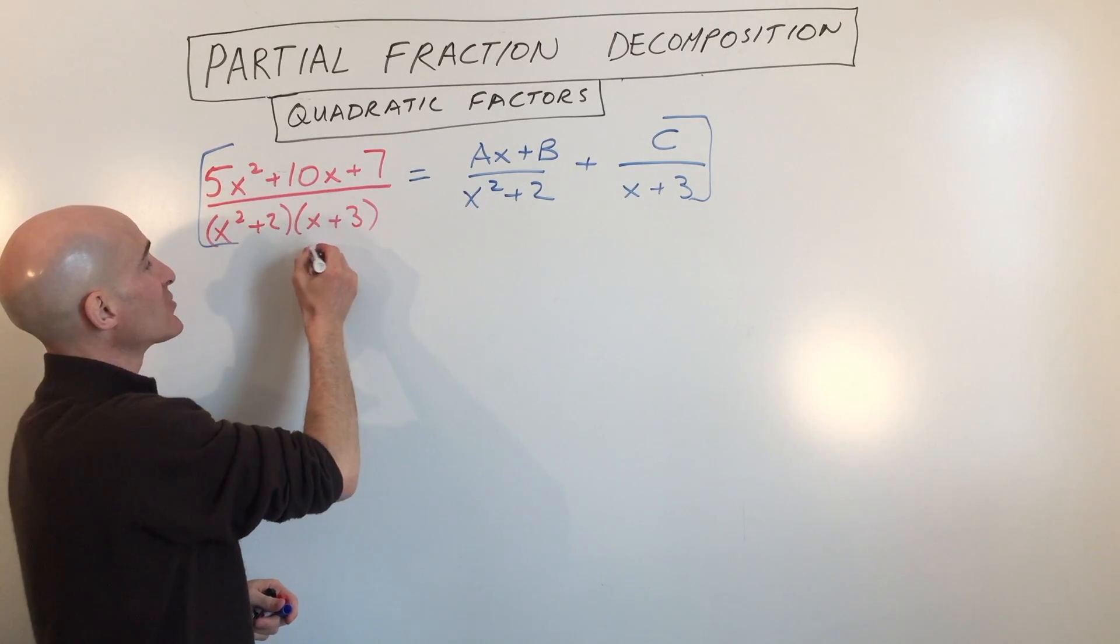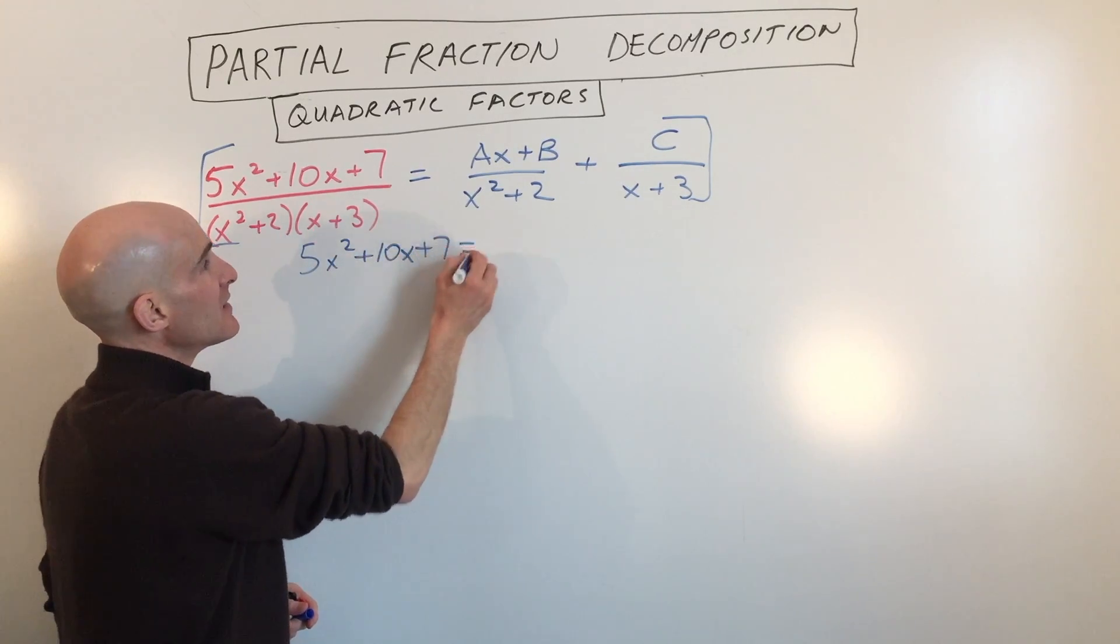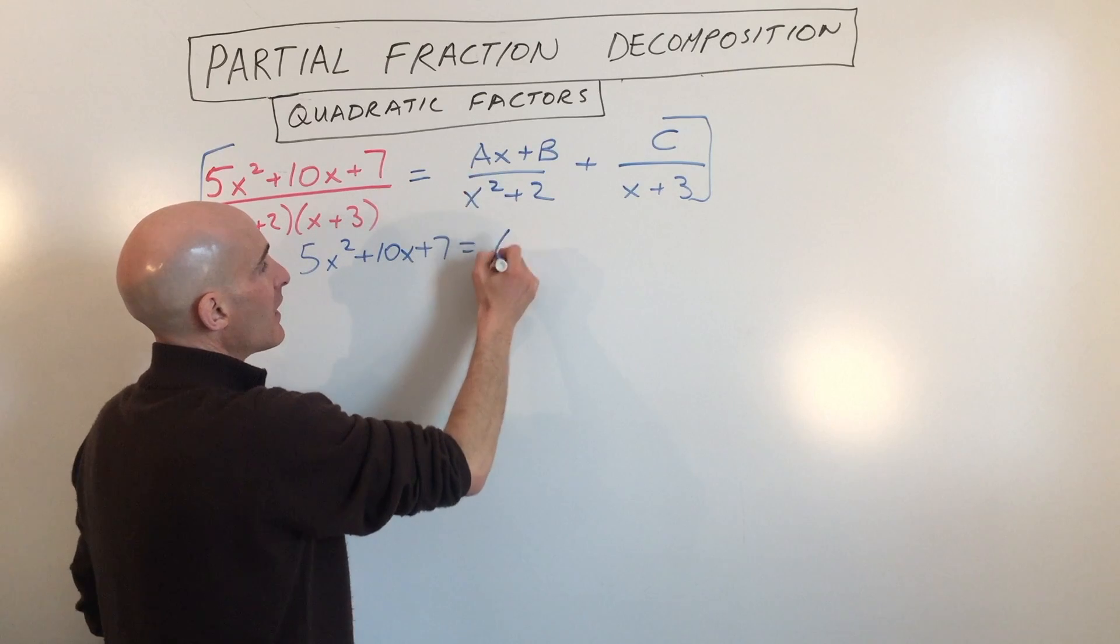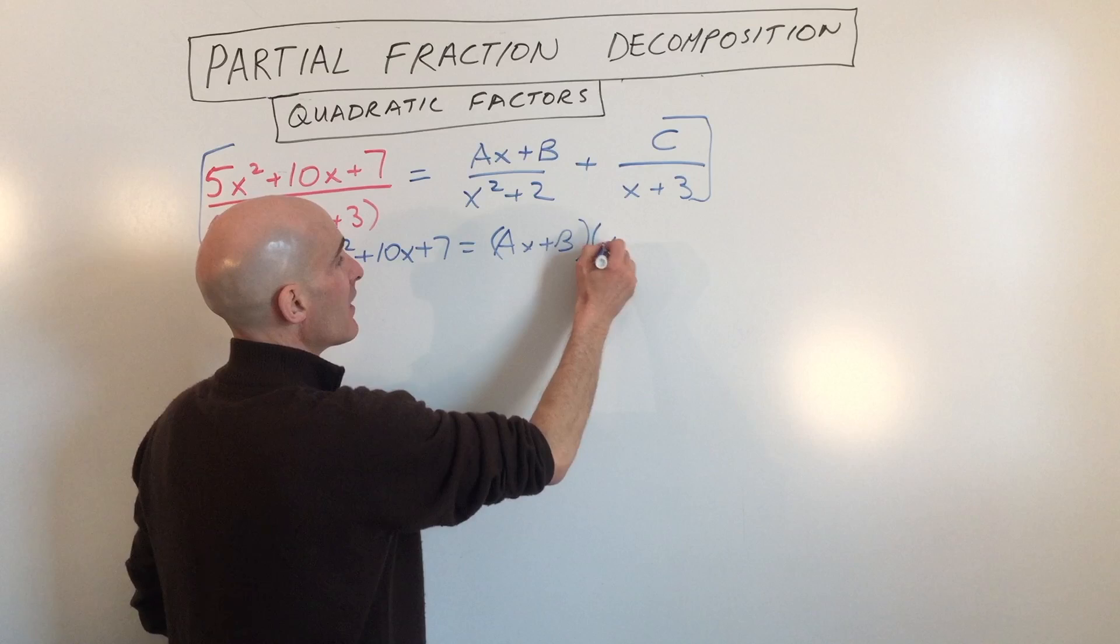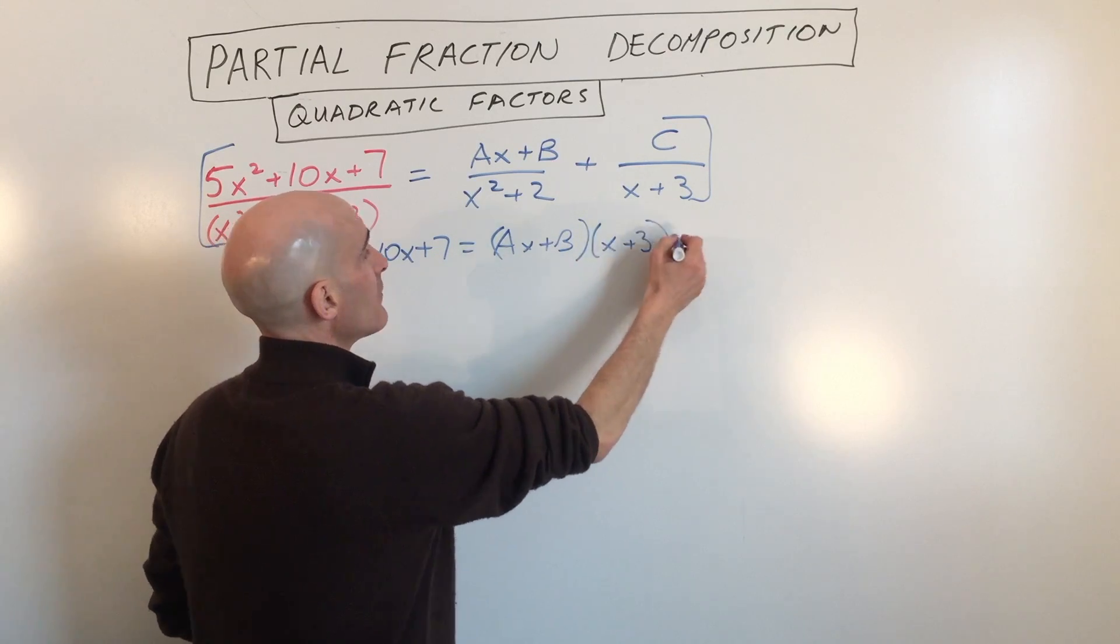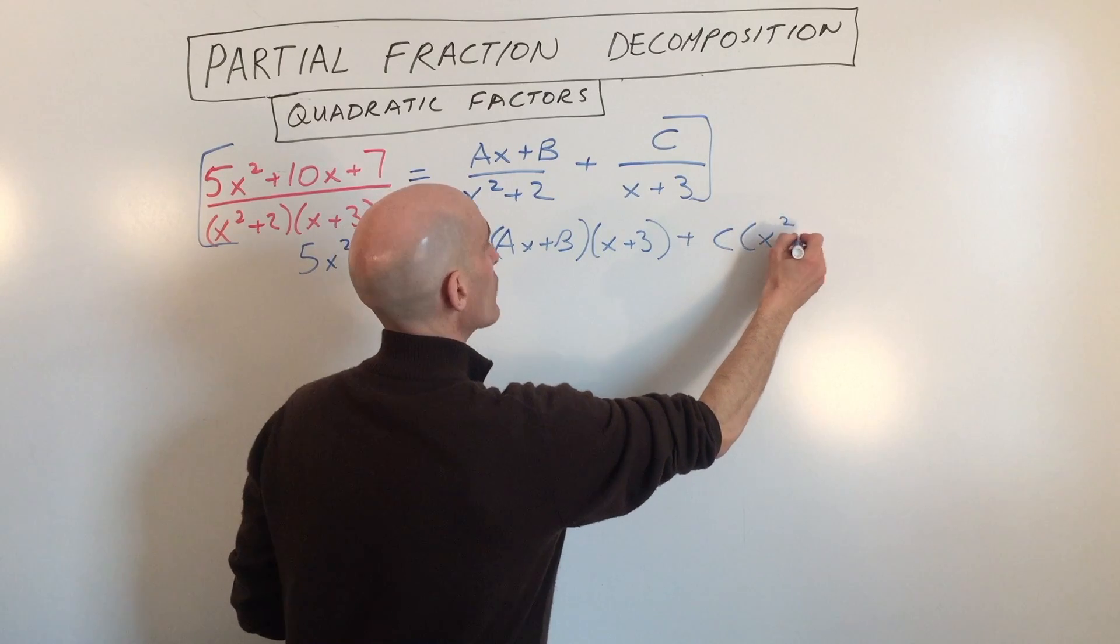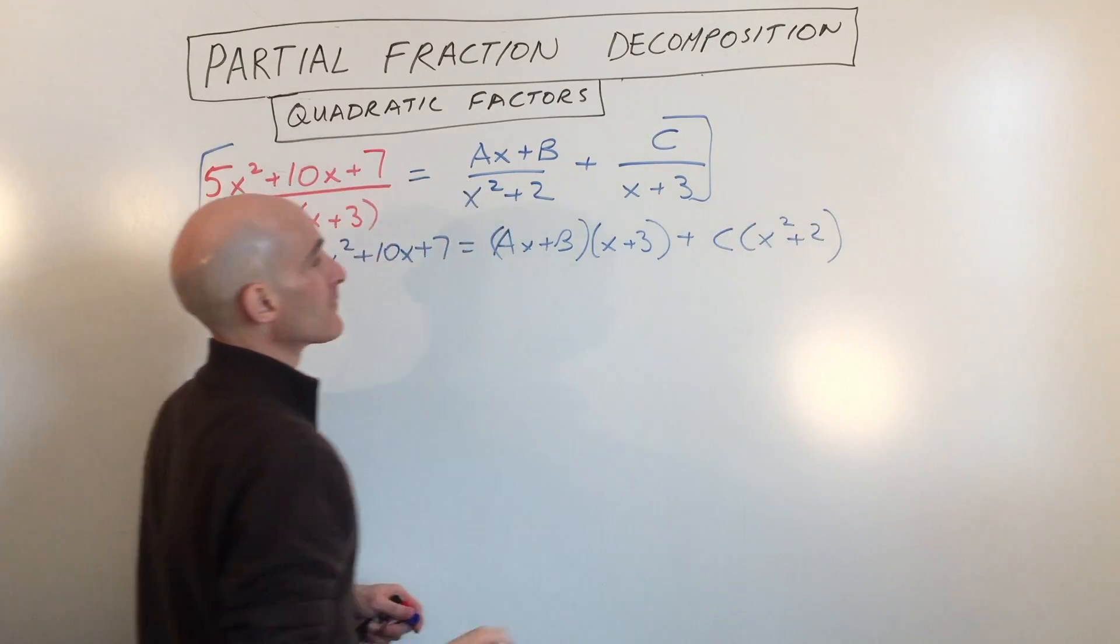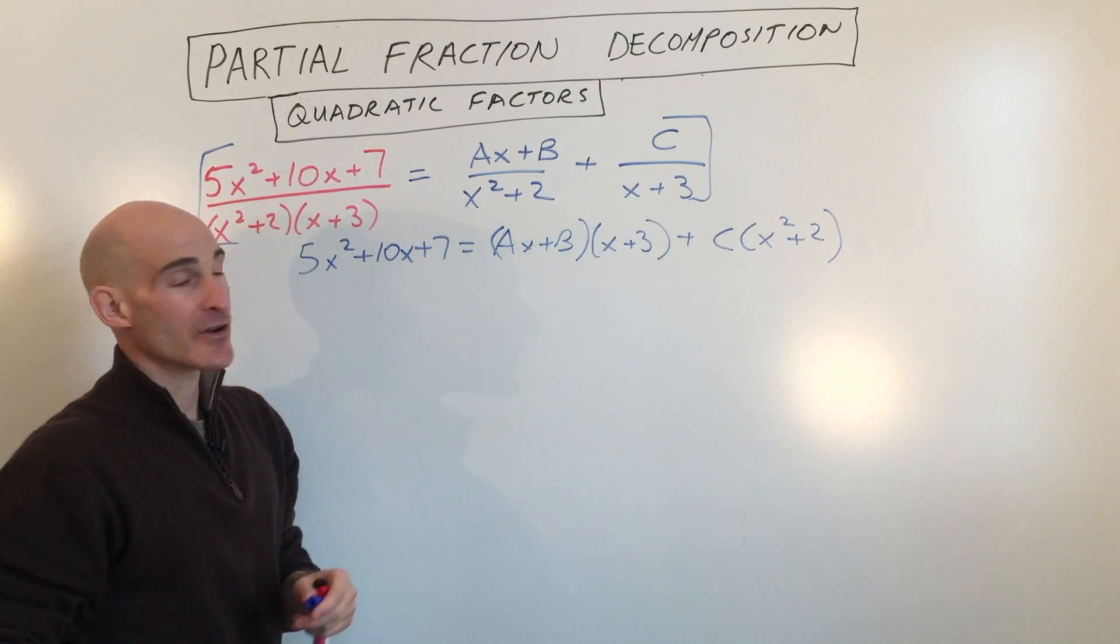If we do that, that's going to clear this denominator and just leave us with 5x squared plus 10x plus 7 equals ax plus b times x plus 3 plus c times x squared plus 2. So now we've got it. We've cleared the denominators.